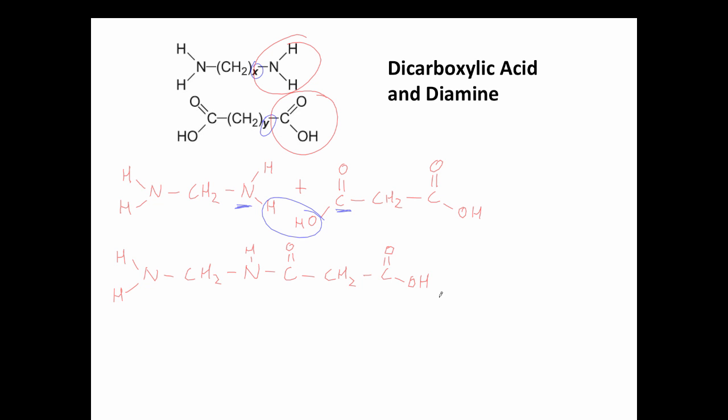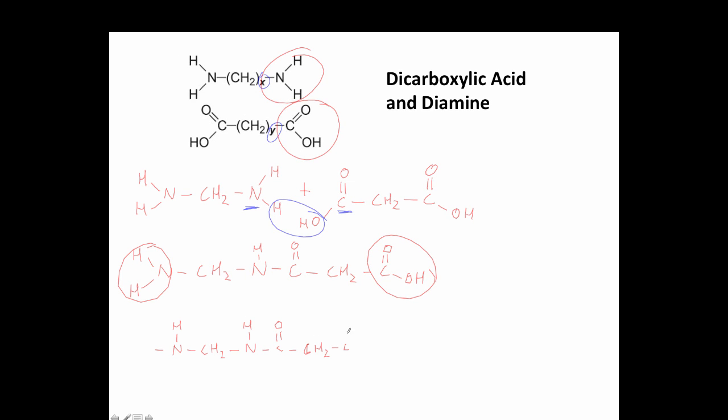The only thing is that obviously these groups here are only going to occur on the ends. So if I want to write out the structure in a way that takes into account that these are going to be bonded to the next repeating unit I'll just put a bond in the place of the OH group and of the hydrogen and I'll get... and this could be my repeating unit.